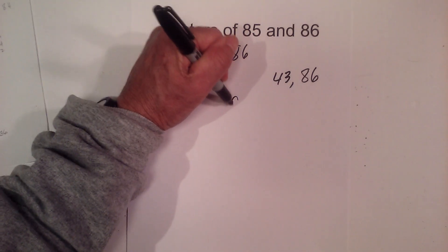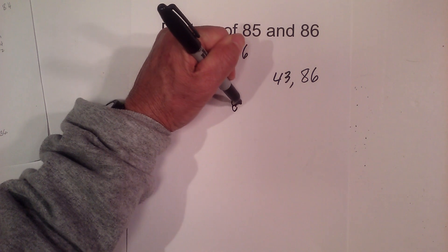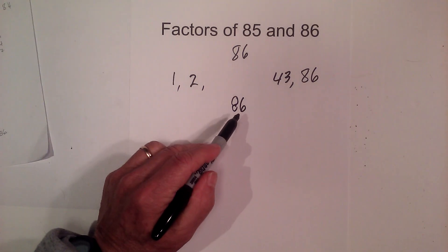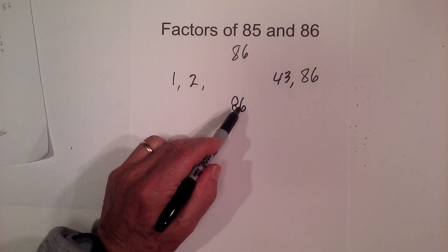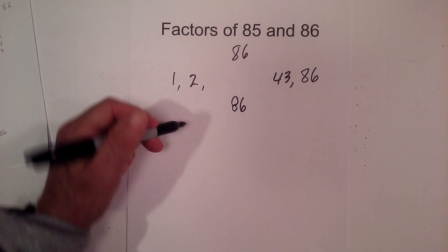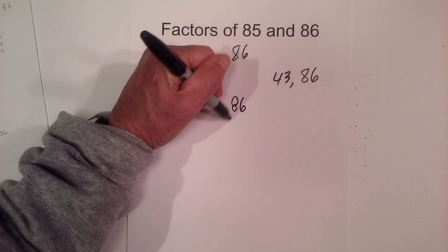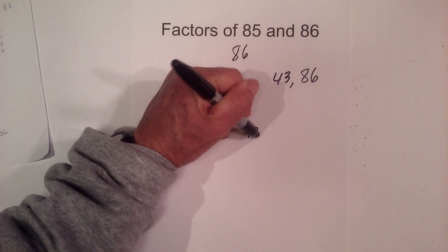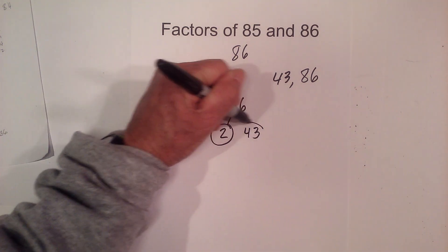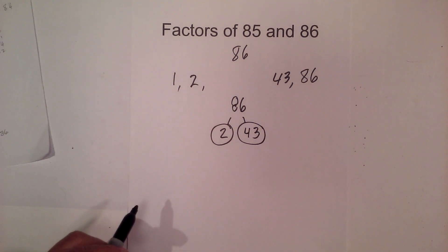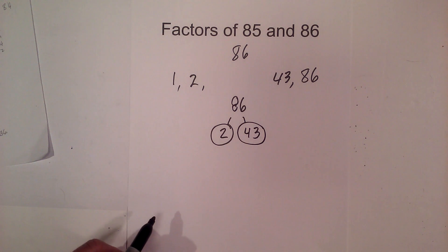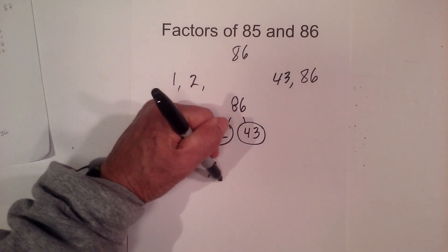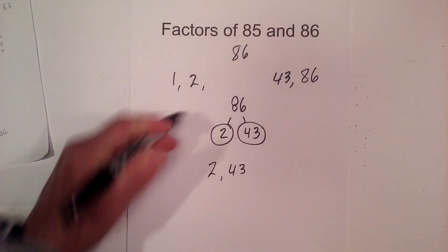If you complete a factor tree for the prime numbers, although it's an even number, you would think there are more factors, but it's 2 times 43. Circle the 2, circle the 43 because they're both prime. So the prime factors for 86 are 2 and 43.